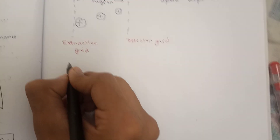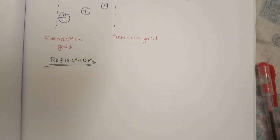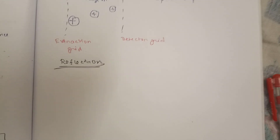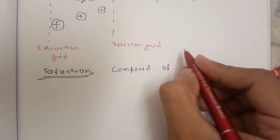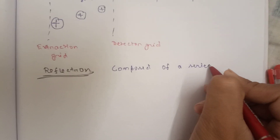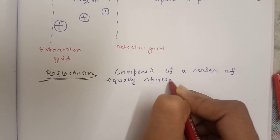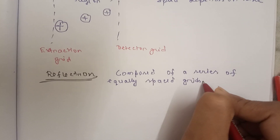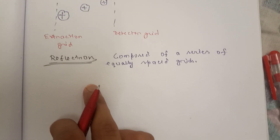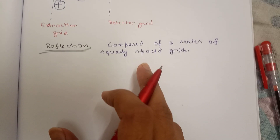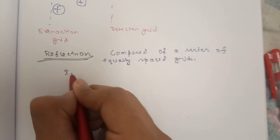Now here comes another concept: the reflectron. The reflectron is composed of a series of equally spaced grids placed at the tube end opposite to the ion source. A potential is applied to the reflectron to reflect the incoming ions. That is why the reflectron acts as an ion mirror.